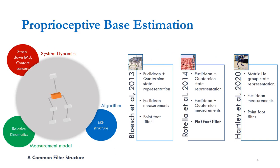Early works in filtering-based proprioceptive state estimation for legged robots fused information from an IMU, legged kinematics, and contact sensors using a quaternion-based extended Kalman filter to obtain the pose and velocity of a quadrupedal robot, along with foot positions and IMU biases. These point-foot model-based estimators were extended to the humanoid robot's flat-foot scenario to include rotational constraints of the foot in contact with the environment. Recently, increasing research interest in the theory of Lie groups has enabled nonlinear state estimation methods, with a latest work developing an invariant extended Kalman filter with stronger convergence and consistency properties.